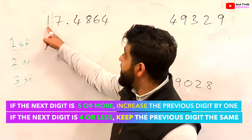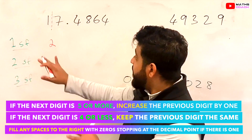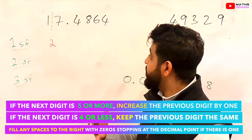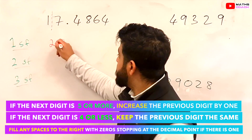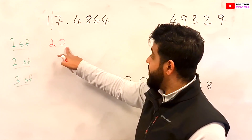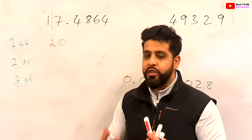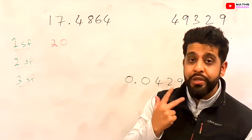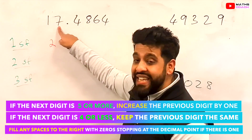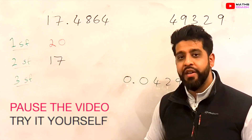We have to consider whether we make the 1 into a 2. 7 will increase it to a 2. Our answer can't just stay as a 2 though — we need a placeholder because 17.4864 is a value between 10 and 20, so we make it 20. Rounding to one significant figure gives 20. Now let's round to two significant figures: 1 is the first and 7 is the second significant figure. We consider the number after that — it's 4, which means we leave the 7 as it is. So to two significant figures this is 17.